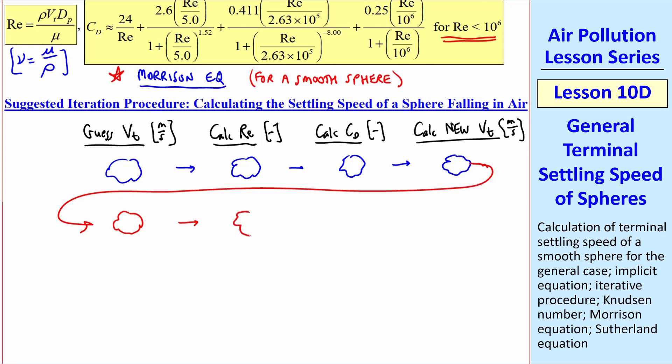With this new vt, you calculate a new Reynolds number, a new Cd, and another vt. Use that vt as your next guess. And you continue the process,